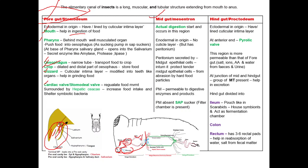At the posterior portion of the foregut, the cuticular intima layer is modified into a teeth-like structure known as the gizzard. The gizzard helps in grinding up food material. At the junction of foregut and midgut, several finger-like structures are there which are known as hepatic caeca or gastric caeca, which help in increasing food intake and shelter symbiotic bacteria.